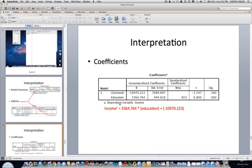We see that education is a significant predictor. And these values here, the constant and the education b-weights are used to create the regression formula. So here we have this coefficient, 3364.764, times whatever value of education that we're going to use, plus the constant, which in this case is negative.